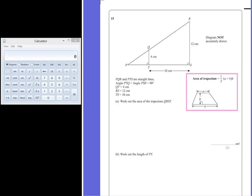Question 15. PQR and PTS are straight lines. Angle PTQ is the same as angle PSR and they're both 90 degrees. QT is 4cm long, RS is 12cm long, and TS is 10cm.